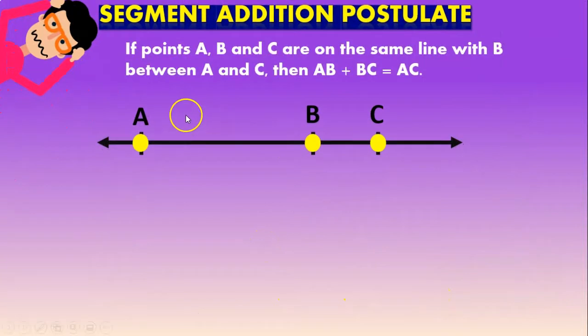So in this case we first have to define the segment addition postulate and what it says. If points A, B, and C are on the same line so they are collinear, with B between A and C, then AB plus BC is going to be equal to AC.